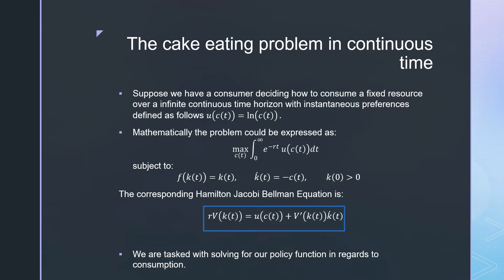That is r*V(kt) is equal to our instantaneous preferences plus the derivative of this value function times the law of motion. We are tasked with solving for our policy function in regards to consumption.